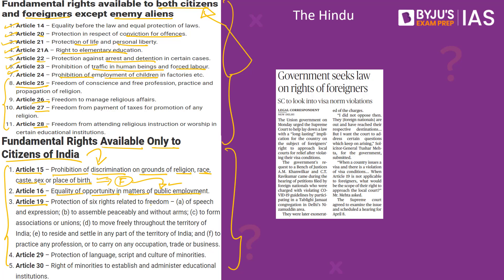Then Article 19, which provides for freedom of speech and expression, the right to assemble peacefully without arms, the right to form associations and unions, the right to freely move around the territory of India, to reside and settle in any part of India, and to practise any profession or occupation, trade or business — these fundamental rights under Article 19 are available only to Indian citizens and not to foreigners. Even the rights given to minorities under Articles 29 and 30 — protection of language, script, and culture, and the right to establish and administer educational institutions — are available only to Indian citizens.